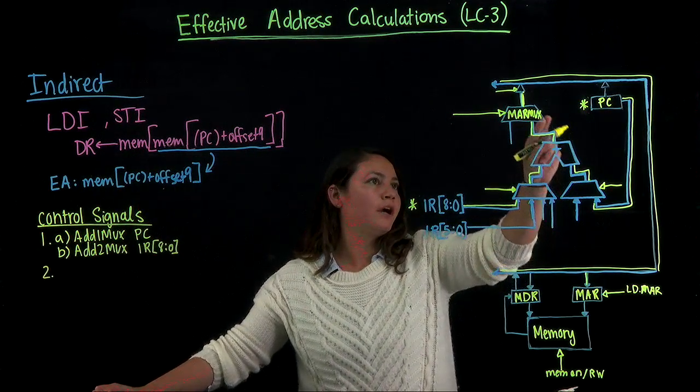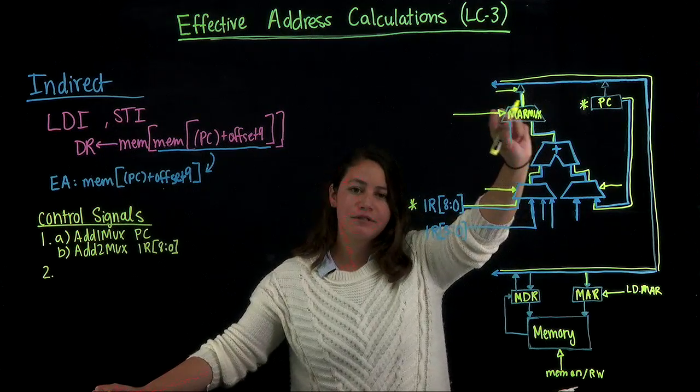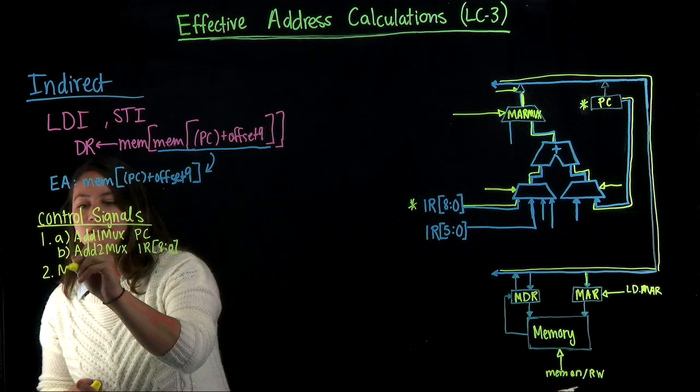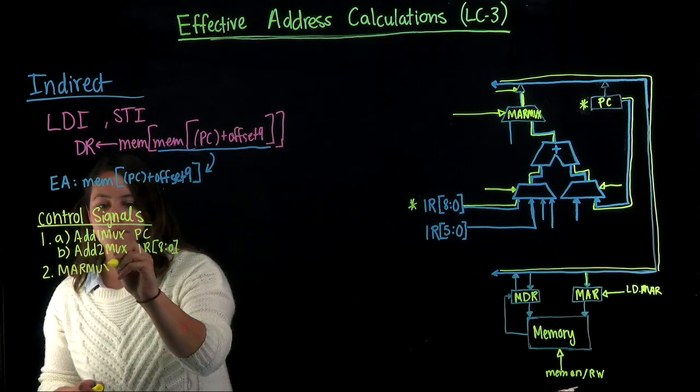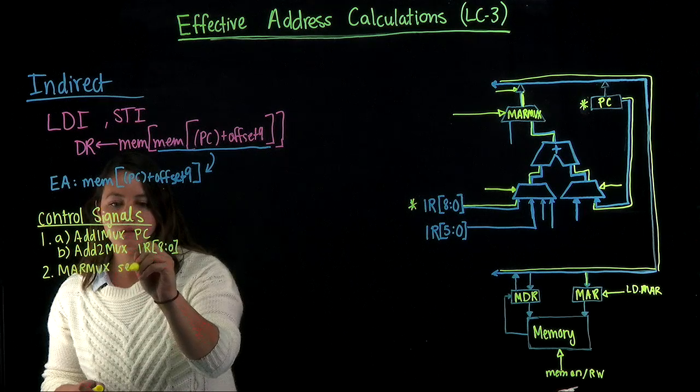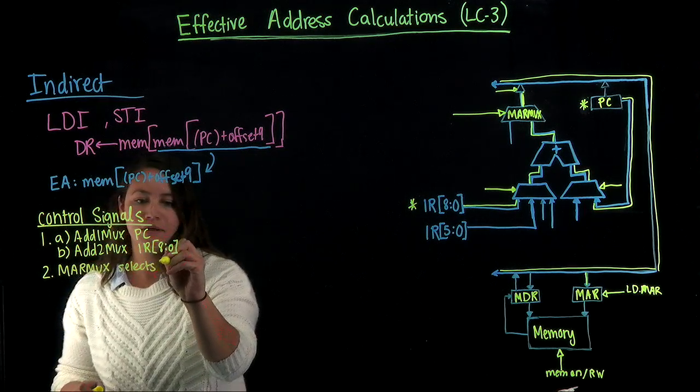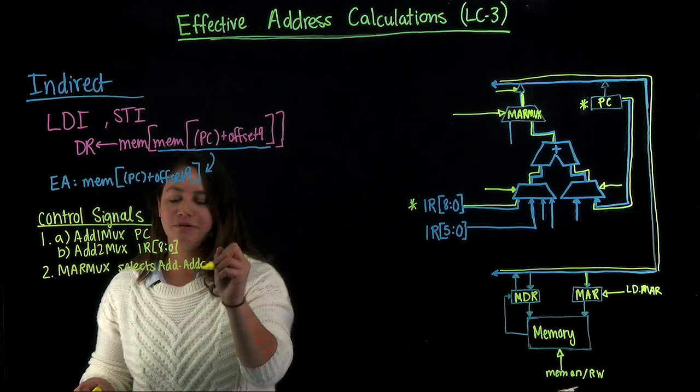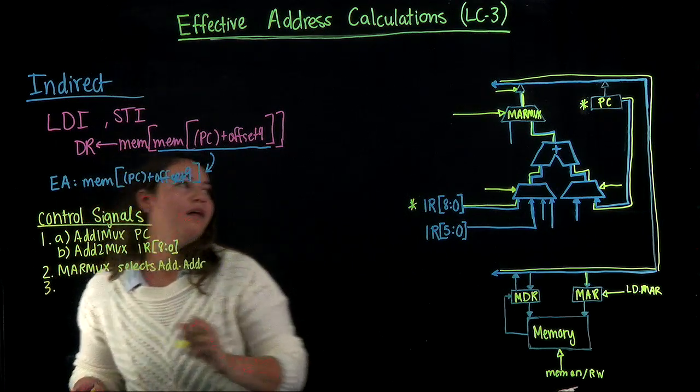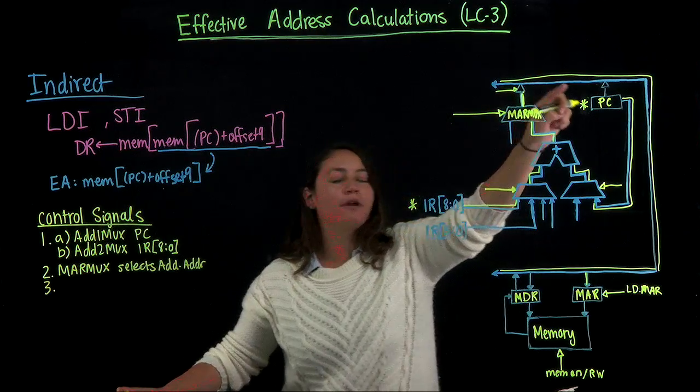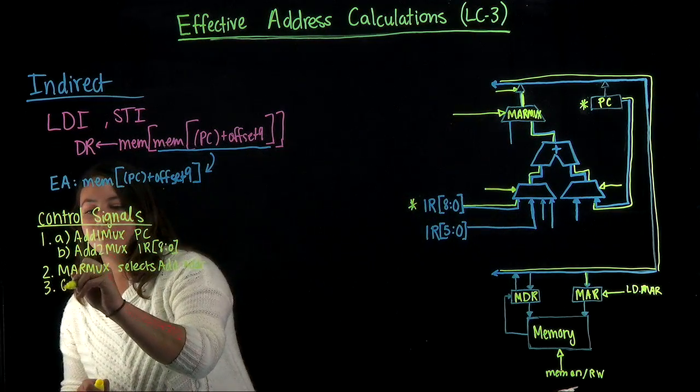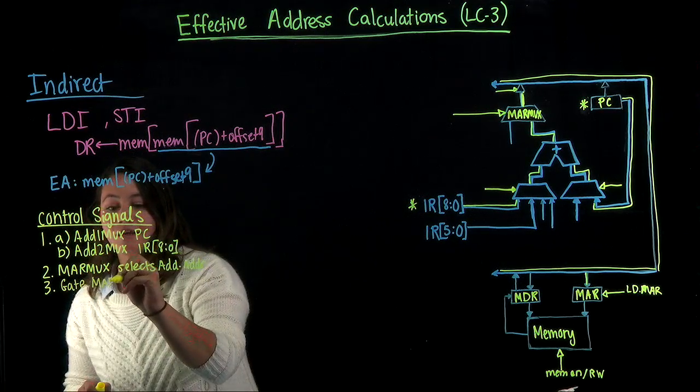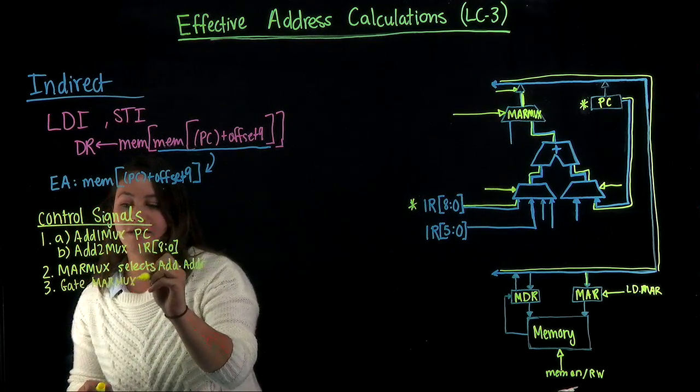Once those go through here and they're through the adder, the next control signal that we're going to send is this one right here for the MAR mux. So the MAR mux selects the address adder. I'm going to abbreviate it a little bit. Once we get that through the MAR mux, we want to open the gate by sending the same control signal as last time, gate MAR mux.